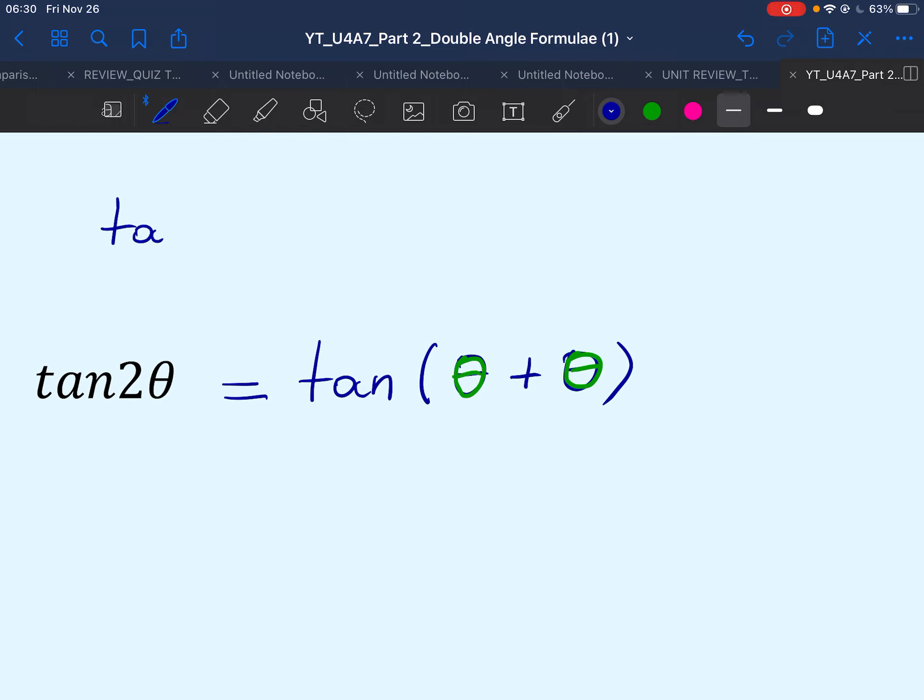Recall the formula for compound angle tan is tan of A plus B equals tan A plus tan B divided by 1 minus tan A tan B.